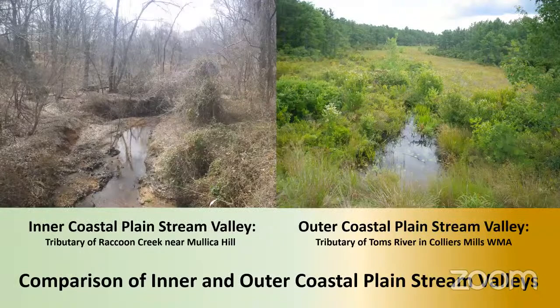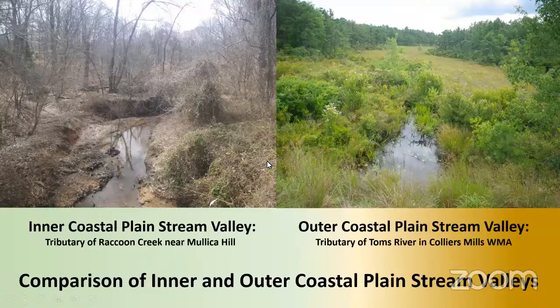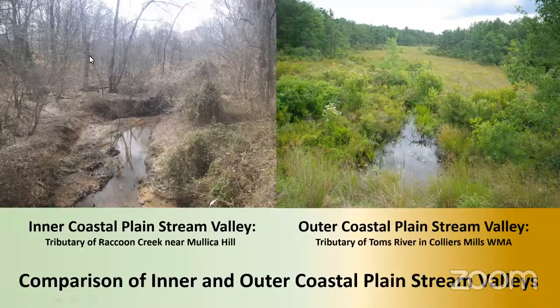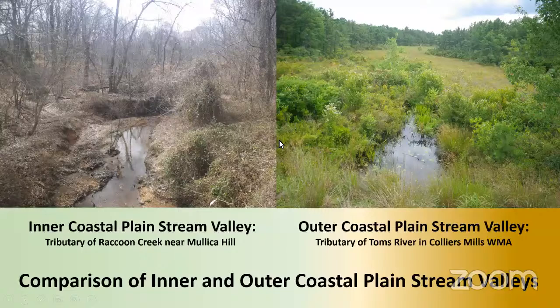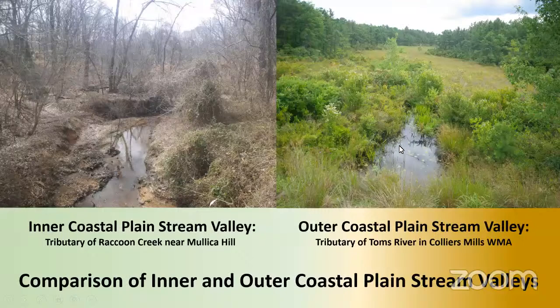Here we have an example comparing Tom's River at Collier's Mills — an outer coastal plain stream — and Raccoon Creek at Mullica Hill — an intercoastal plain stream. Aside from the difference in seasons, you can see the Mullica Hill location has really steep banks near the river and fairly steep uplands, giving you a deep valley with a muddy river. If you go to the outer coastal plain, you get a very gradual change in elevation — basically a swamp with the river running through the middle.